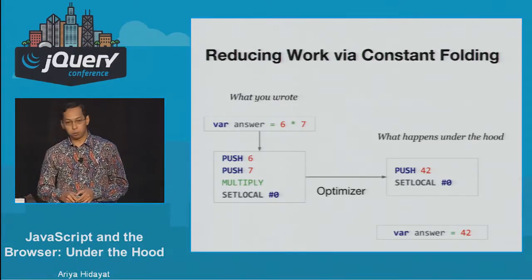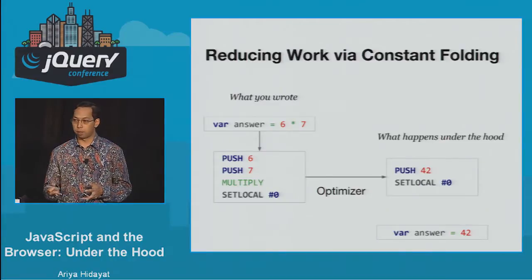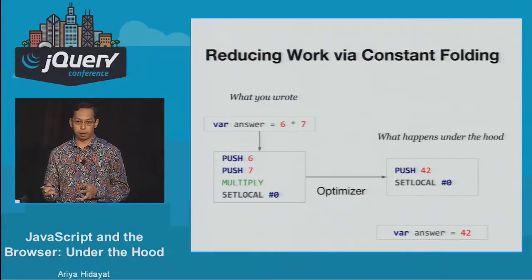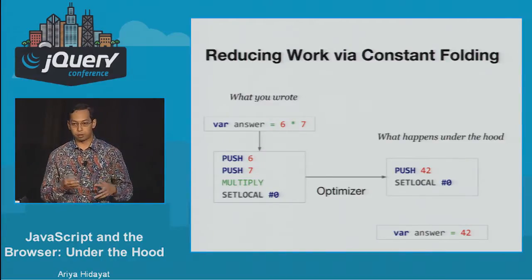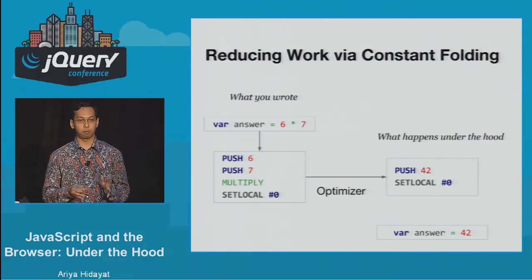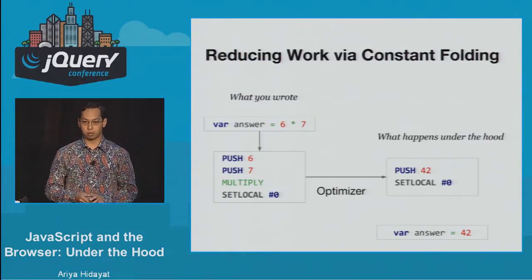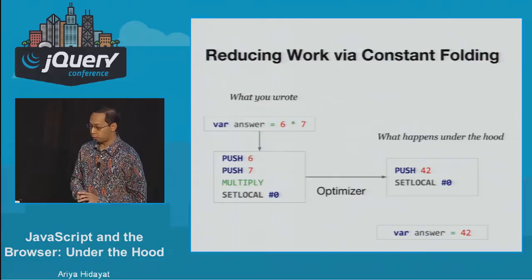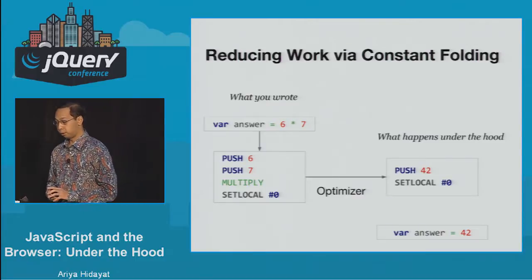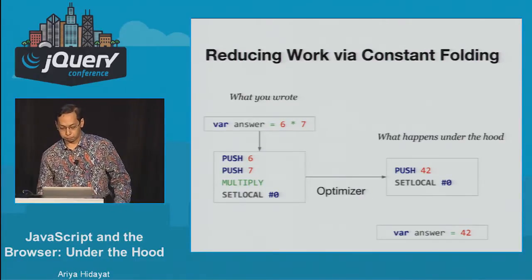Don't worry about little things like caching array length or doing magic things with strings, because most of the time if you can figure out how to optimize that by hand, the JavaScript engine can also do it automatically for you — and you keep your source code quite readable.